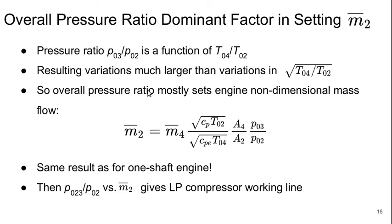So, what this shows us is that the overall pressure ratio is a dominant factor in setting M bar 2. This is the same equation here in the middle of the slide. So, P03 over P02, of course, is a function of T04 over T02. And the resulting variations in that pressure ratio are going to be a lot bigger than the variations in the square root of T04 over T02 that also appears in this equation.